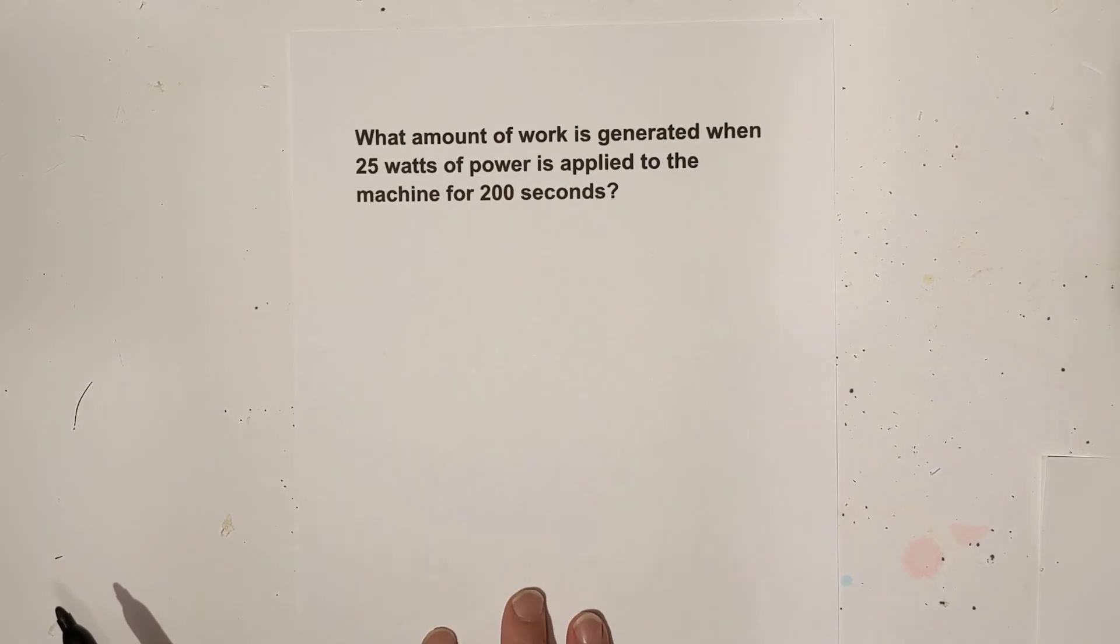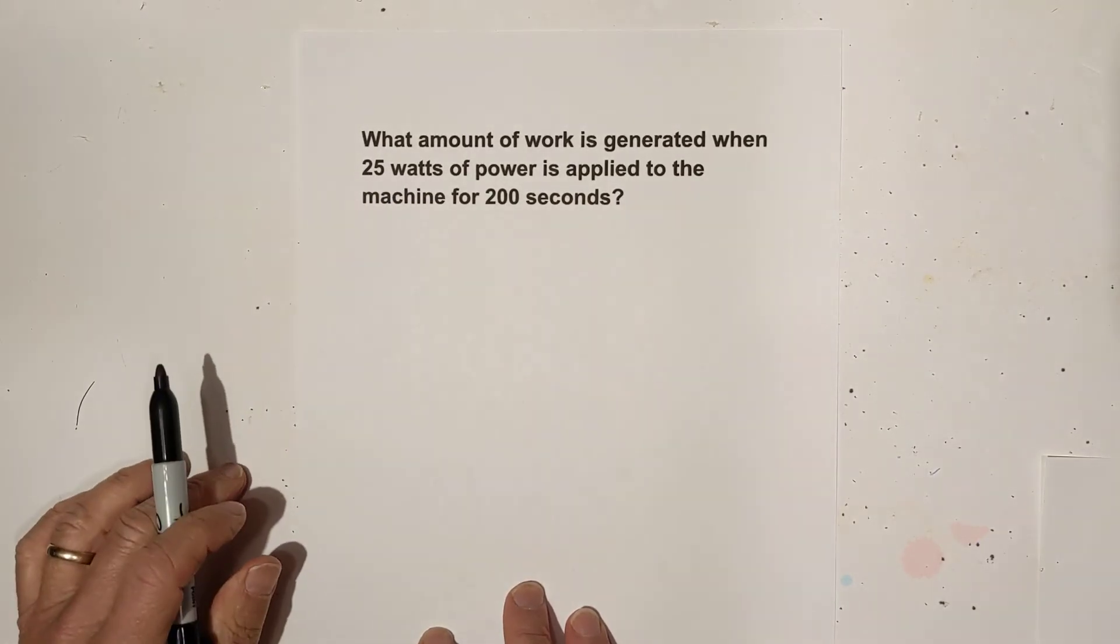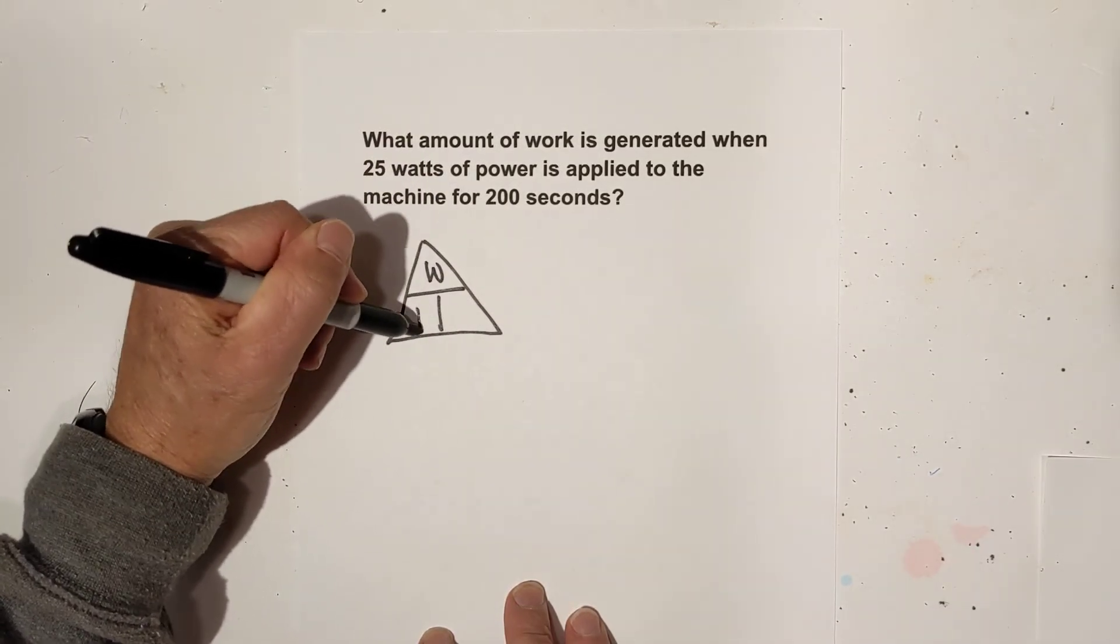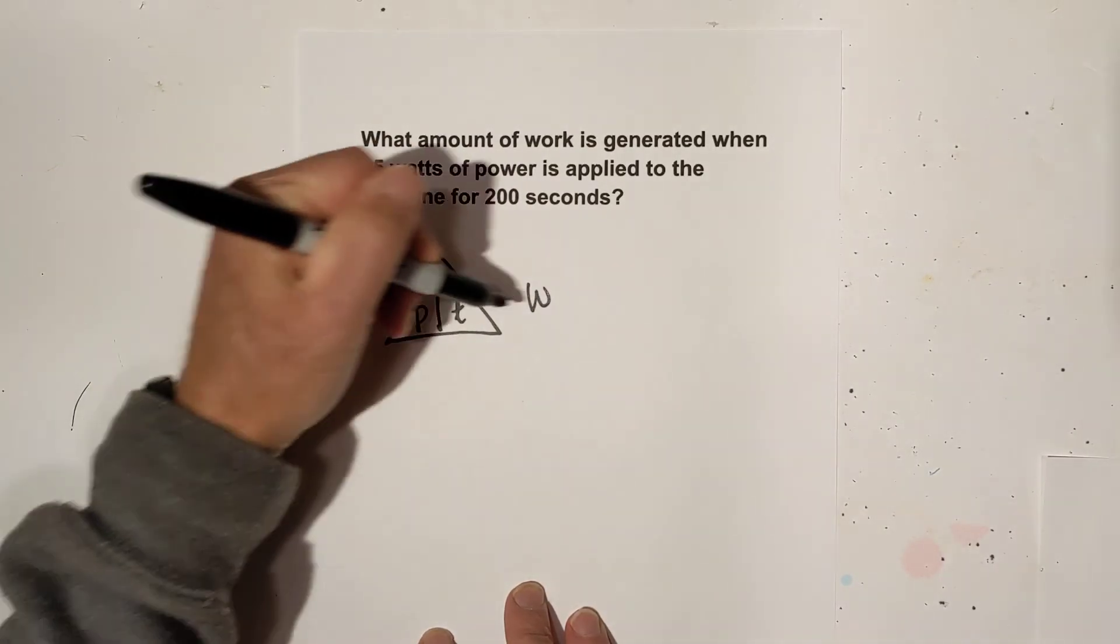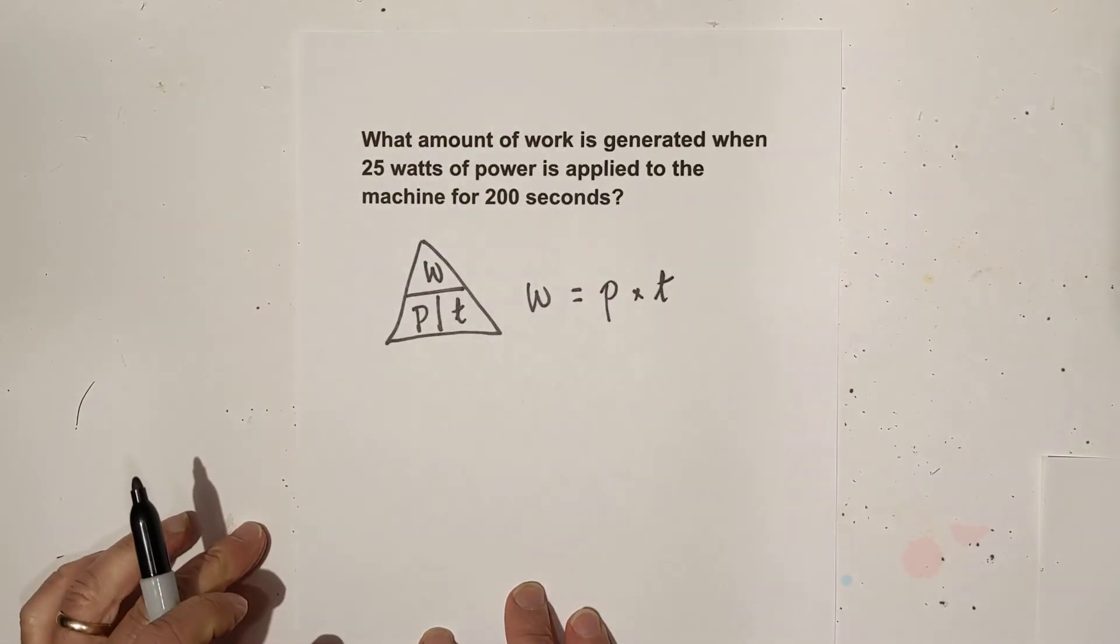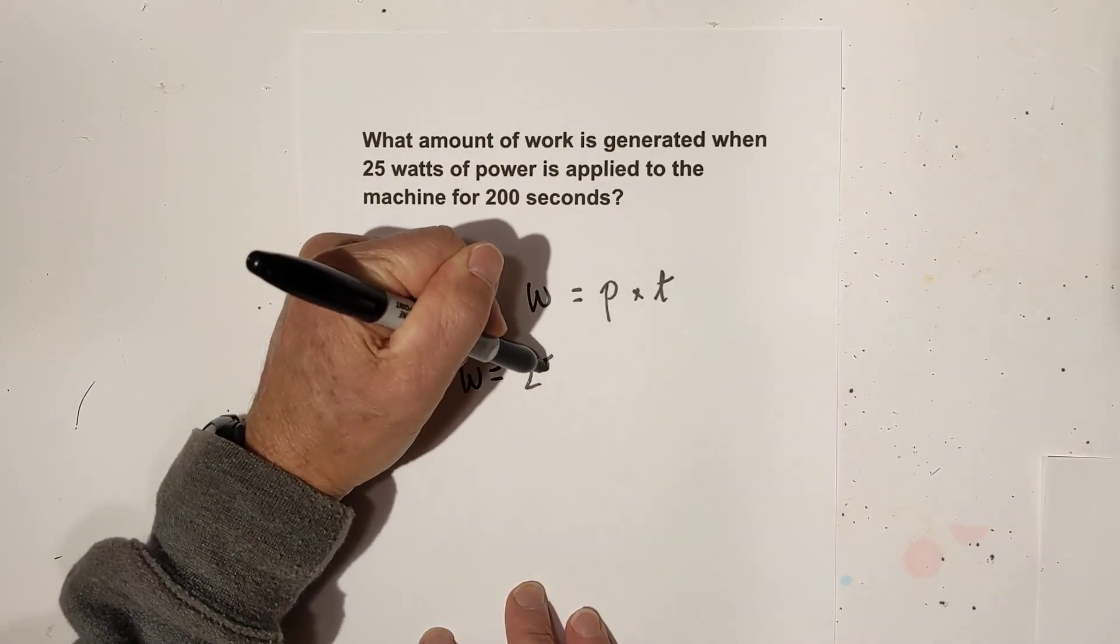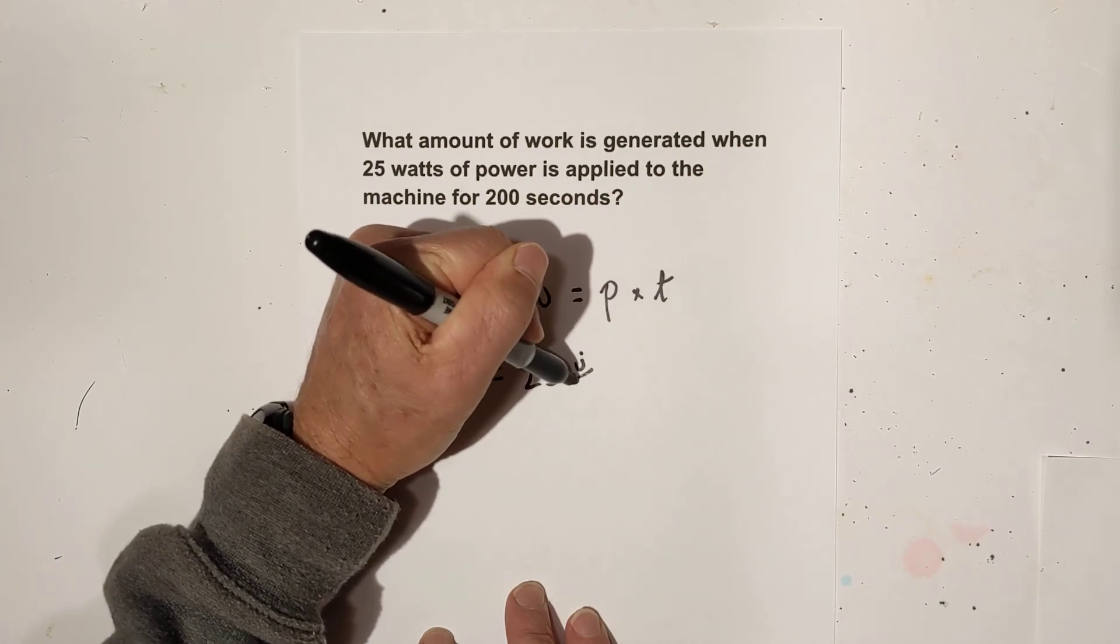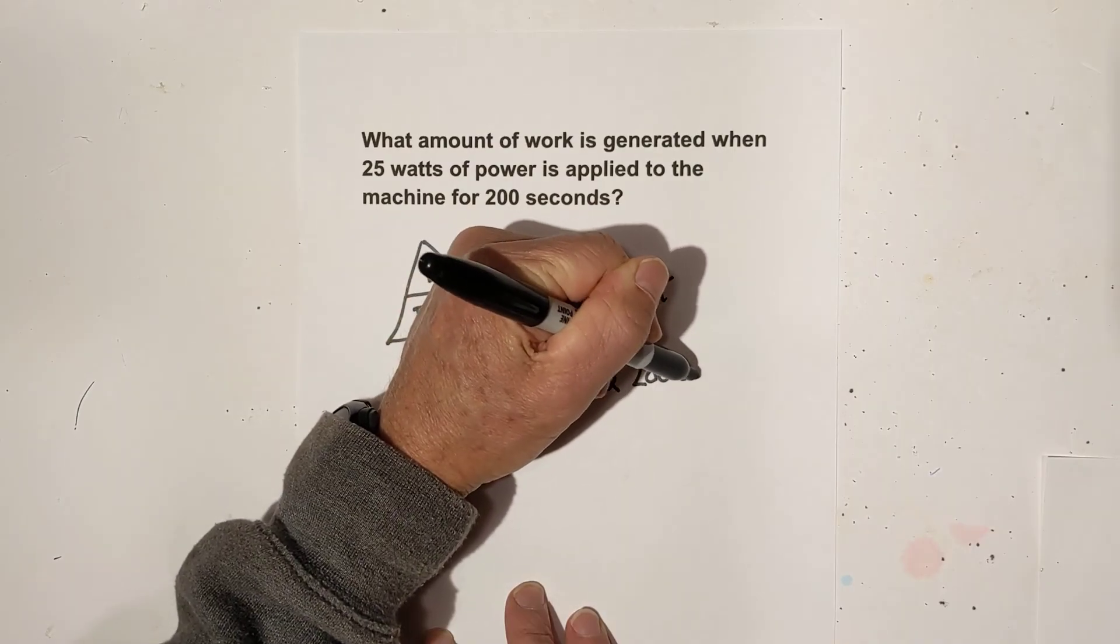For our final example, what amount of work is generated when 25 watts of power is applied to the machine for 200 seconds? We have work, power, time. We're looking for work and that is going to be equal to power times time. It says we have 25 watts of power, and remember, watts is joules over seconds times 200 seconds.